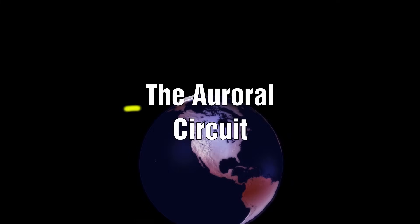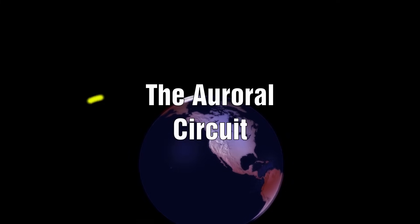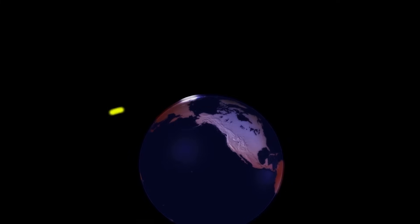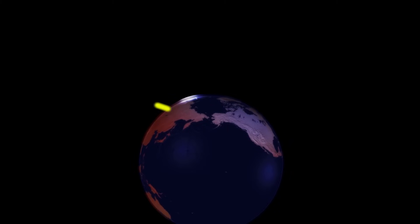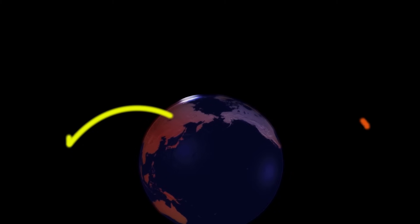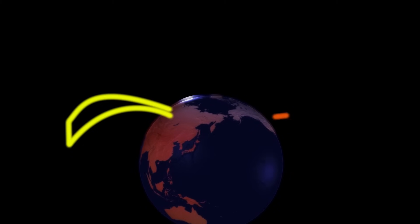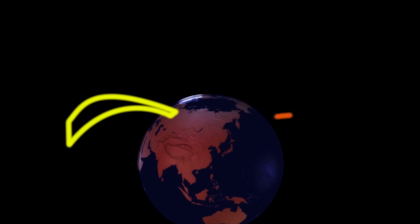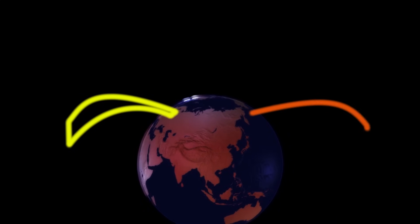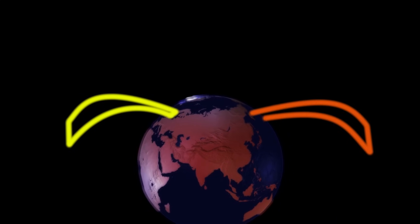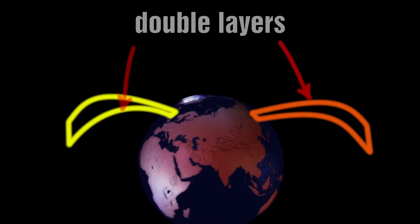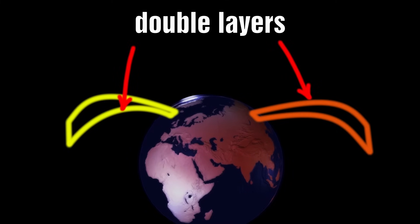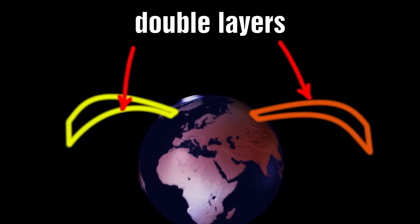We know that at the dawn side of the auroral zone, there are currents flowing into the auroral zone at high latitudes and leaving the zone at lower latitudes. At the evening side, these currents will be reversed. These currents flow in sheets along the magnetic field lines and are called Birkeland currents. The circuit is closed in the upper ionosphere and in the plasma near the equatorial plane.